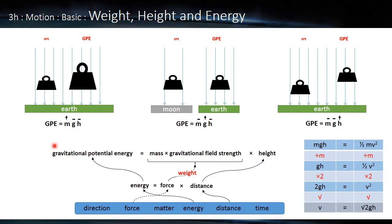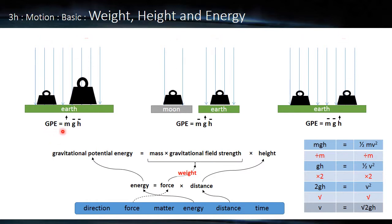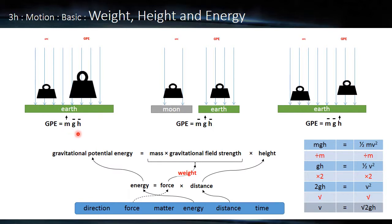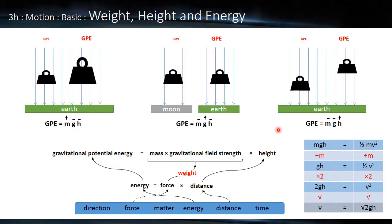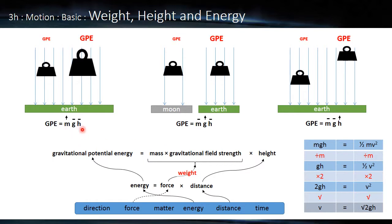So that gives us this formula, GPE, gravitational potential energy, is mass times gravitational field strength times the height. And we're going to have a look in three scenarios here, how each of these factors on the right hand side influence how much energy we have.